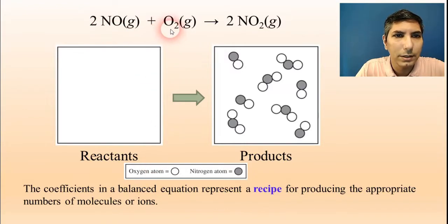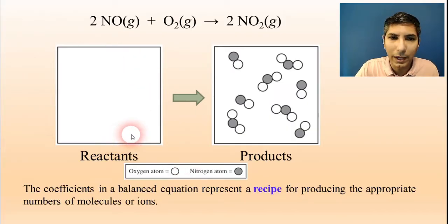We have 2NO plus O2 yields 2NO2 and we're given a blank box to fill in to show what the reactant mixture would have looked like, and then we're given a box that has the product mixture here at the end of the reaction.